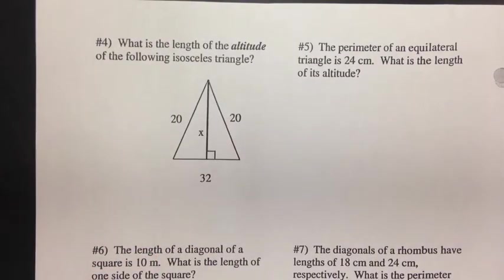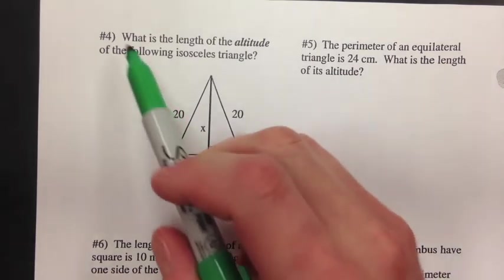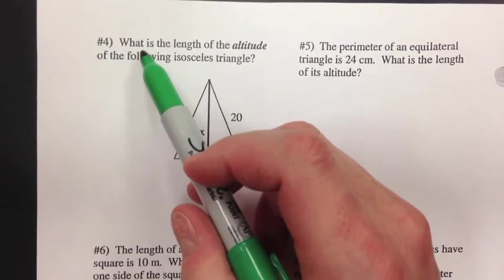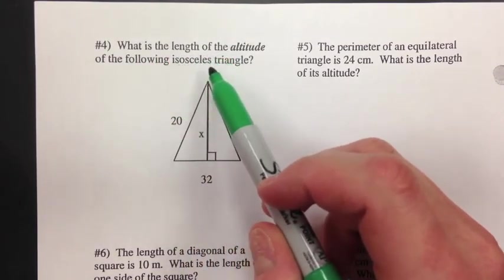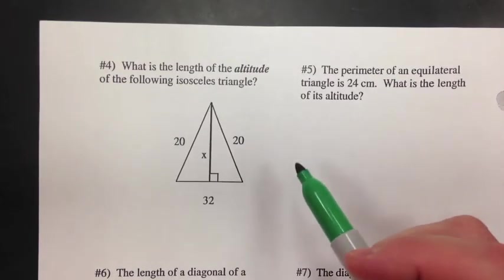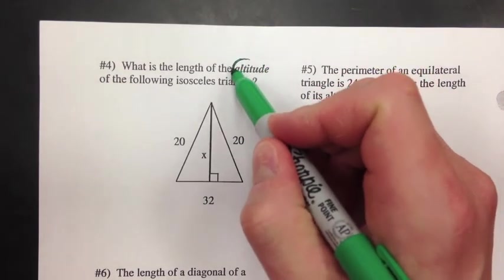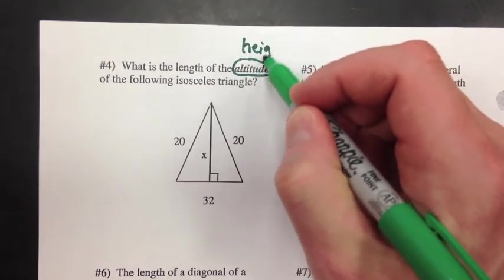Okay, now, we'll do some more kind of wordy problems here. In number four, what is the length of the altitude of the following isosceles triangle? All right, now, there's a couple relationships here we need to be aware of.